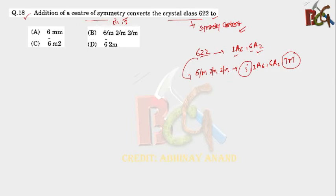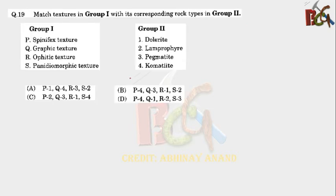So in question, addition of a center of symmetry converts the crystal class 6222. Now, what will be the symmetry content of other options? Go and watch my video. You will get a lot of information from that. Look, in crystallography, you have to remember some data. If you have to clear the JAM, then you have to... Let's see the next question. Match textures in group 1 with the corresponding rock types in group 2.